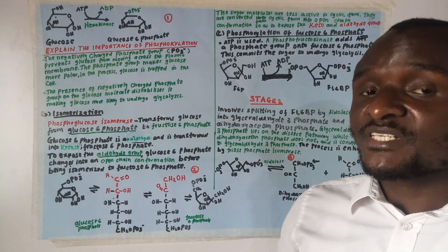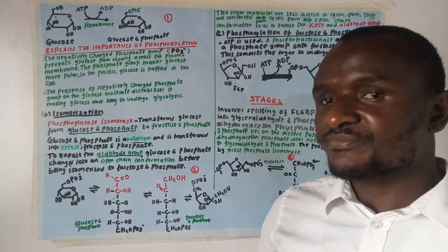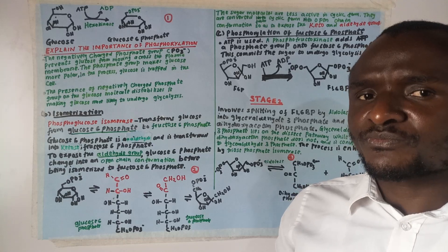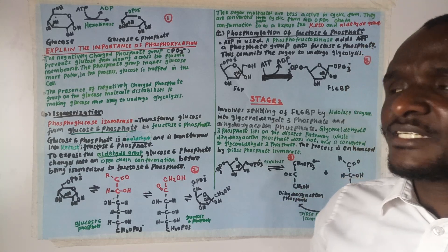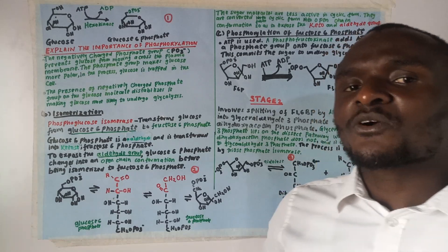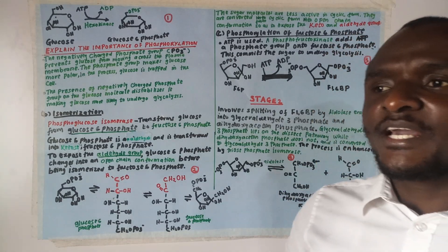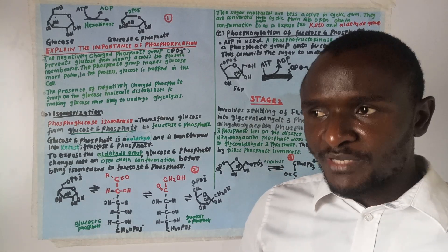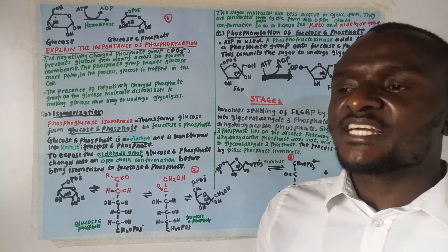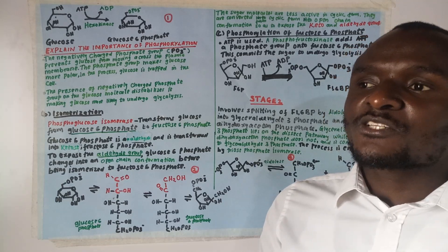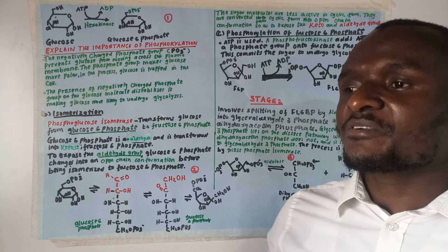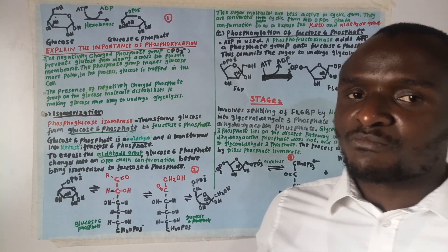Another very important point to note is that the presence of a negative charge on the glucose molecule prevents glucose from moving across the cell membrane. One of the major important properties of a cell membrane is that it has both positive and negative charges, so the presence of those charges will prevent glucose-6-phosphate from moving across the cell membrane.